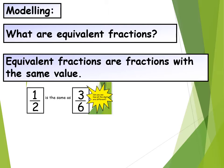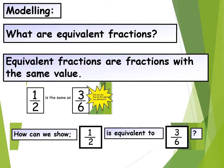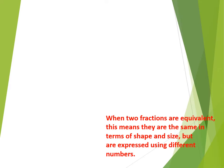So I am going to prove how we can show 1 out of 2 is equivalent to 3 out of 6. When two fractions are equivalent this means they are the same in terms of shape and size but are expressed using different numbers. So you need to think about the same in terms of shape and size, even though it is in different numbers.